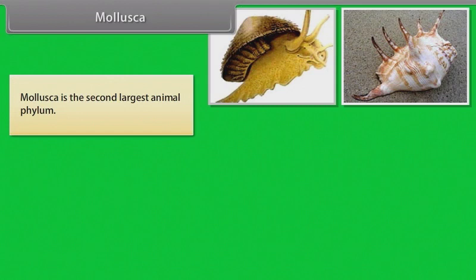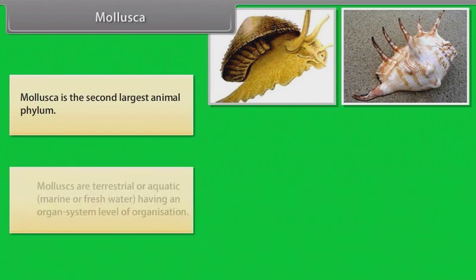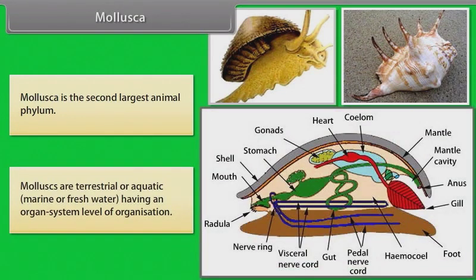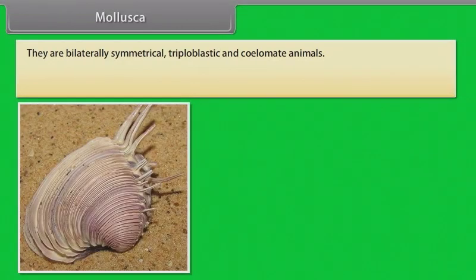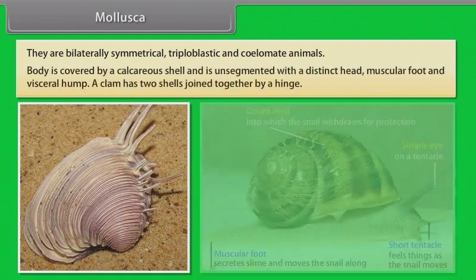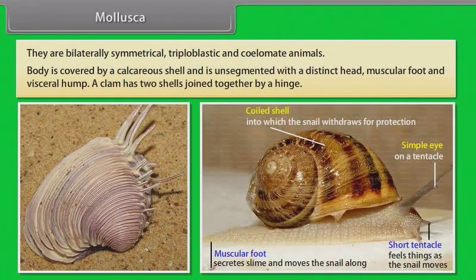Mollusca is the second largest animal phylum. Molluscs are terrestrial or aquatic — marine or freshwater — having organ system level of organization. They are bilaterally symmetrical, triploblastic and coelomate animals. The body is covered by a calcareous shell and is unsegmented, with a distinct head, muscular foot and visceral hump.